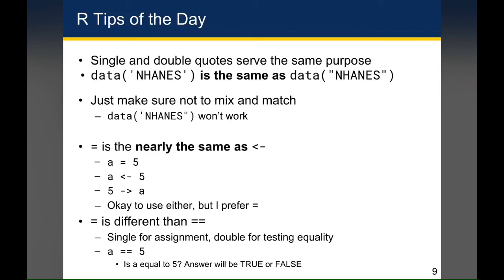You can use any of those three syntaxes when working with R, but my preference is the equal sign. Also, to be clear: a single equals sign refers to assignment, where you're assigning a value to a variable, and a double equals sign is used for testing equality. So if you wrote a == 5, that's a question: is a equal to five? This will return either TRUE or FALSE — TRUE if a equals five, and FALSE if it does not.